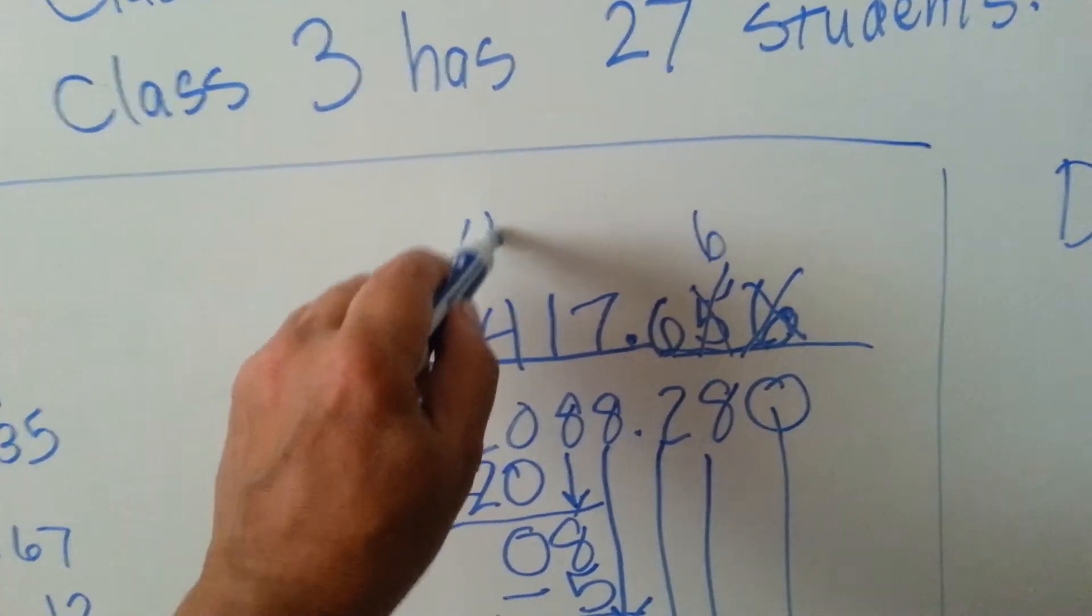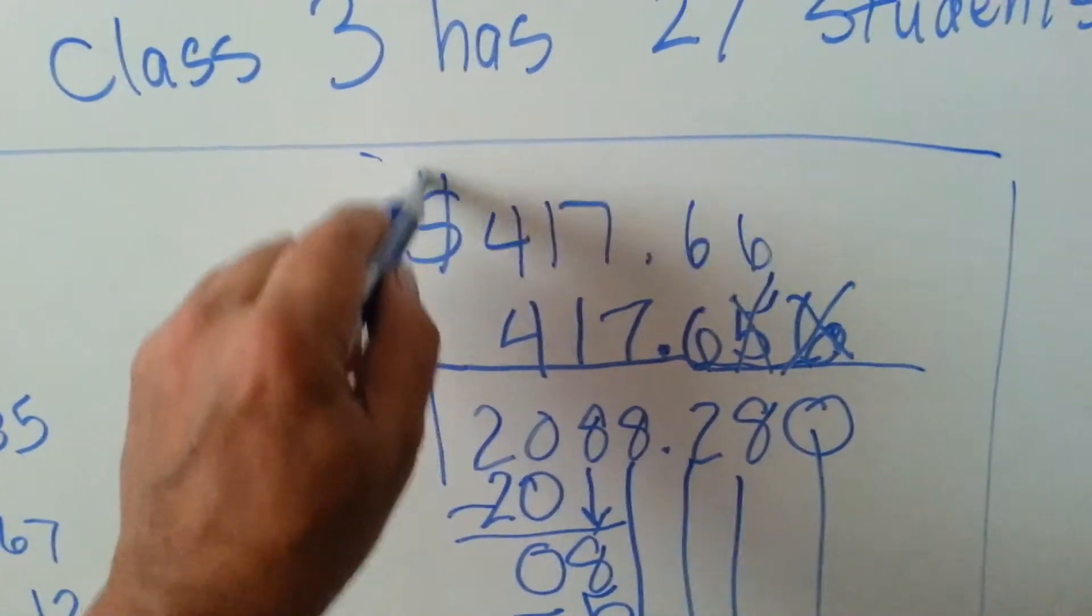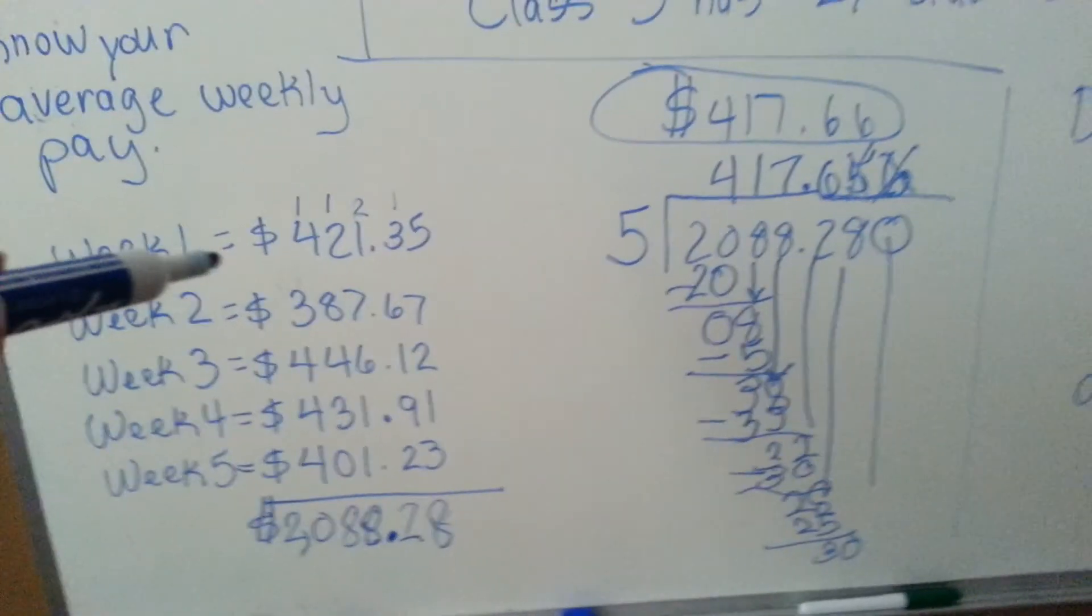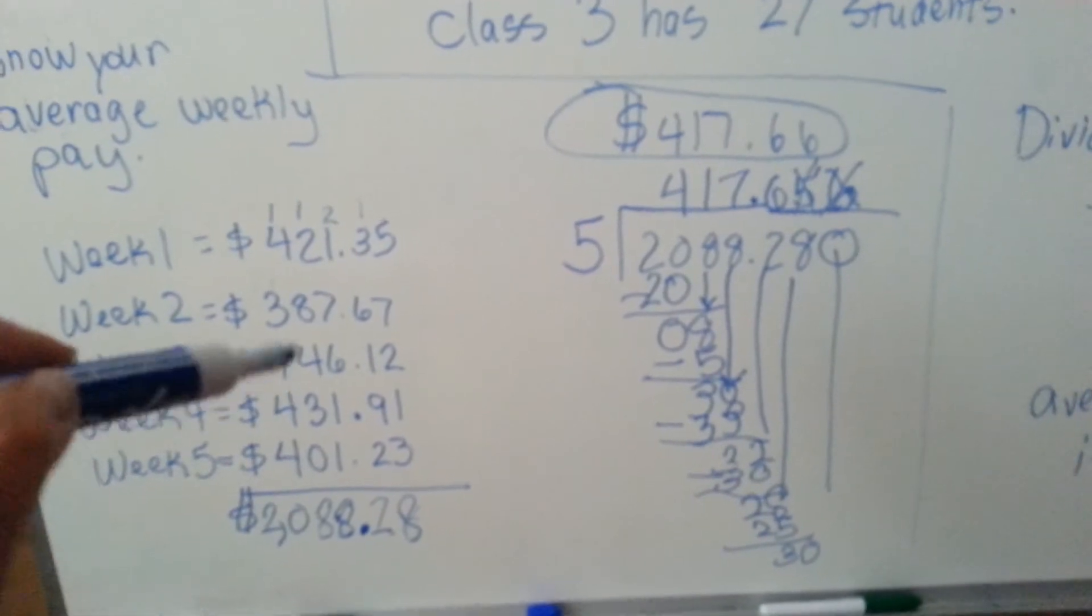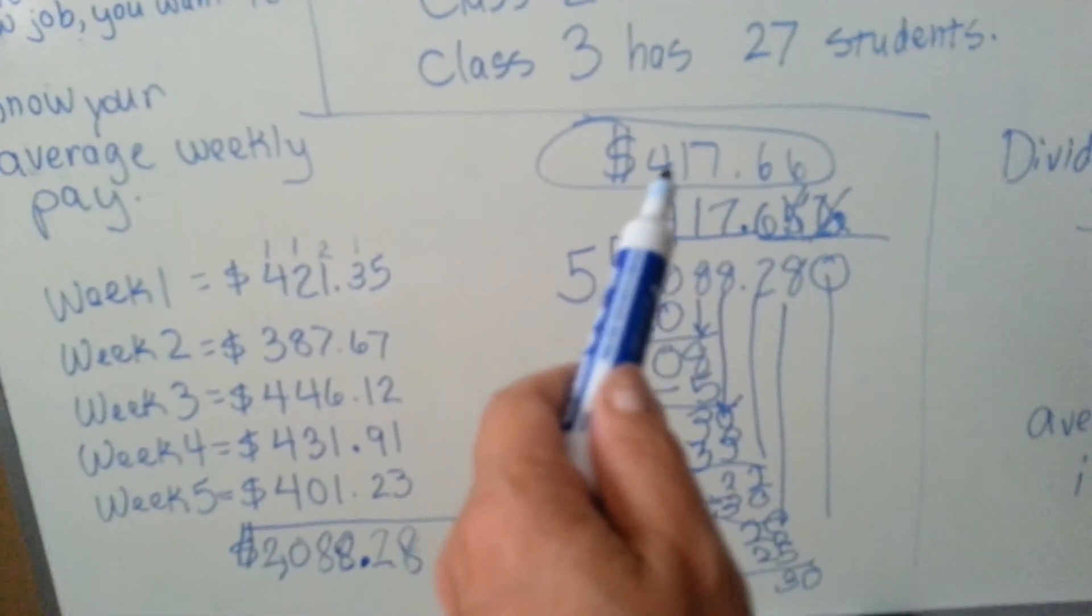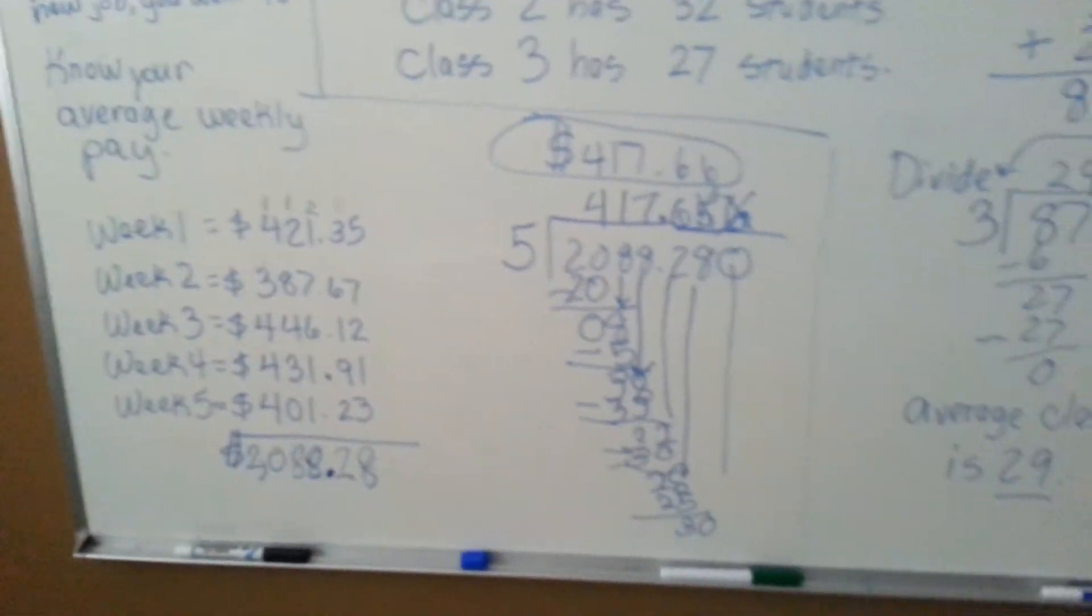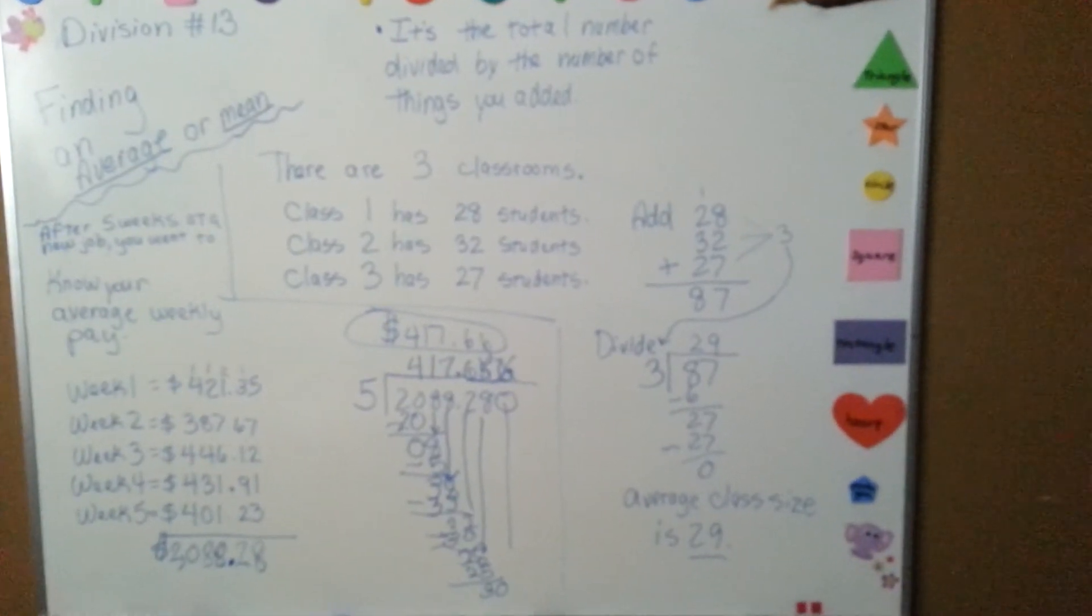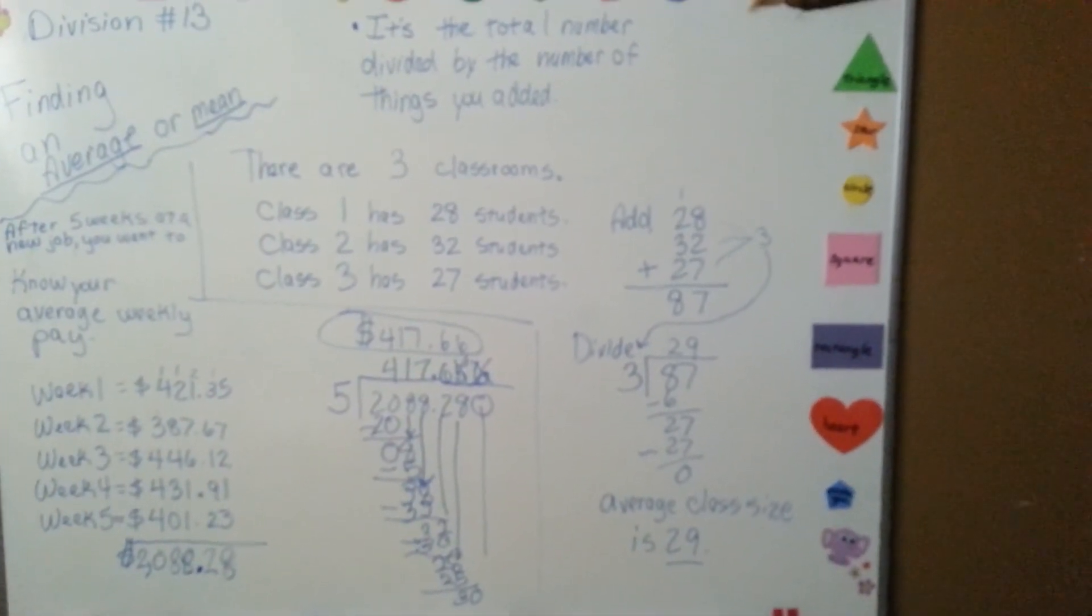So really, our answer is $417.66. That is the average pay for 5 weeks. So you can see that some weeks were small, some weeks were bigger, and our average came out to $417.66. I hope that you make more than that at your job. That is how you find an average, or a mean, of numbers.